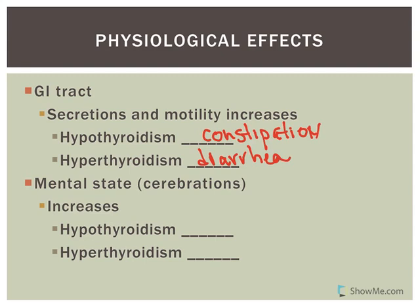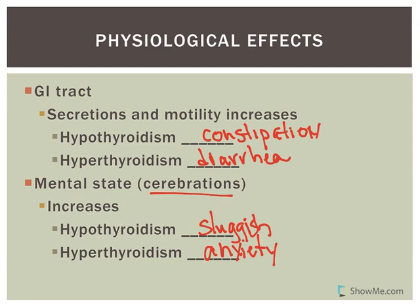Thyroid hormones affect the central nervous system — both normal CNS development and your mental state, referred to as cerebration, which involves thinking and cognition. Overall, thyroid hormones increase cerebration. If you're hypothyroid, you tend to be mentally sluggish. If you're hyperthyroid, you tend to have anxiety — you're always thinking and can't turn it off. People with hyperthyroidism may also have problems sleeping because they can't turn off their brain.